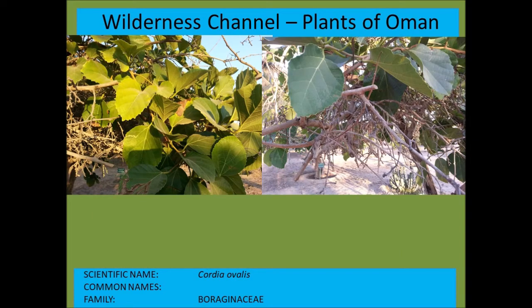Cordia ovalis — the saucerberry tree. It has round yellow berries with a saucer-like appendage around the edge, hence the name.